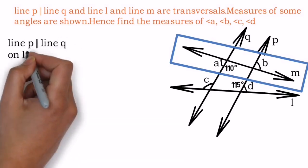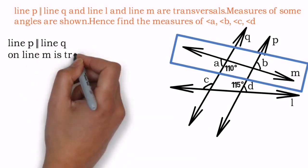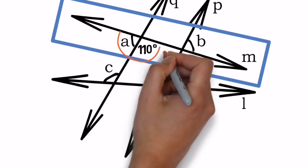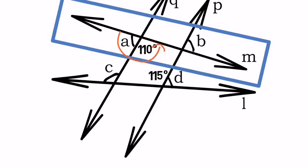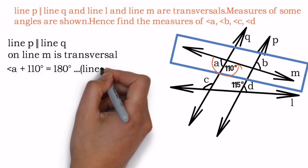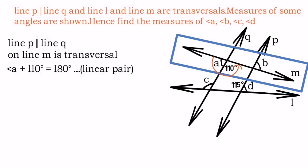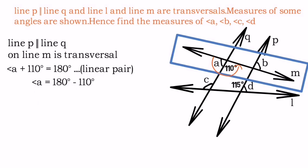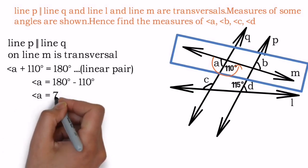If you observe the diagram after marking the transversal, angle a and 110 degrees are very next to each other. So we can say these two angles are linear pair, and linear pairs are supplementary. So angle a equals 180 minus 110 degrees, and that results in angle a equals 70 degrees.